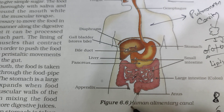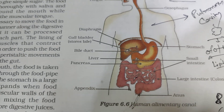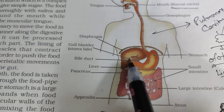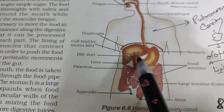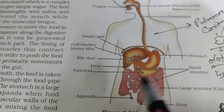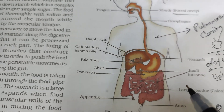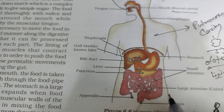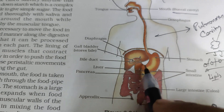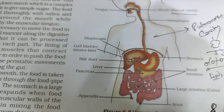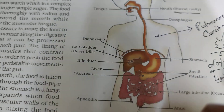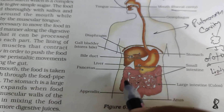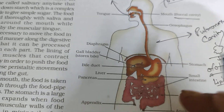Nothing else is absorbed, so all your undigested food will come out. Why is the color yellow? Because of bile juice — bile juice mein bilirubin and biliverdine present hota hai. Bilirubin and biliverdine are pigments, and that is why the stool is yellow.